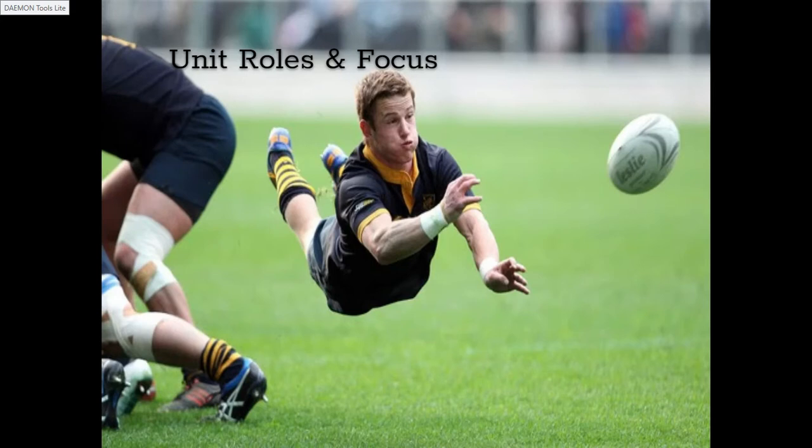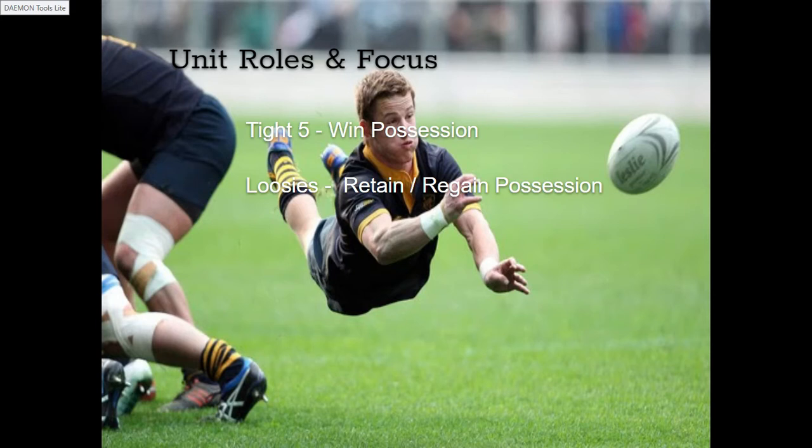After the core aspects we're going to look at the units within rugby and their roles and focus. I found this to be really helpful for my development and understanding of game plans, strategies, and tactics. When we have a clear understanding of what the roles of each unit are, it's very easy to be analytical and data-driven. The tight five's job is to win possession — through scrums, lineouts, and kickoffs. Everything in rugby starts with a set piece, so it's up to the tight five to win possession on every set piece.